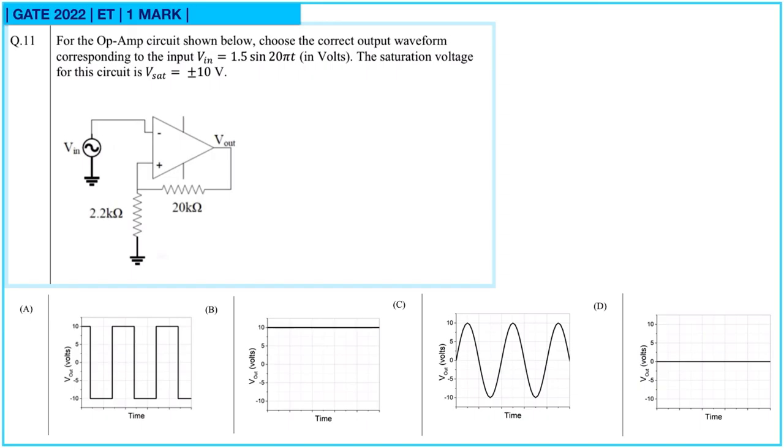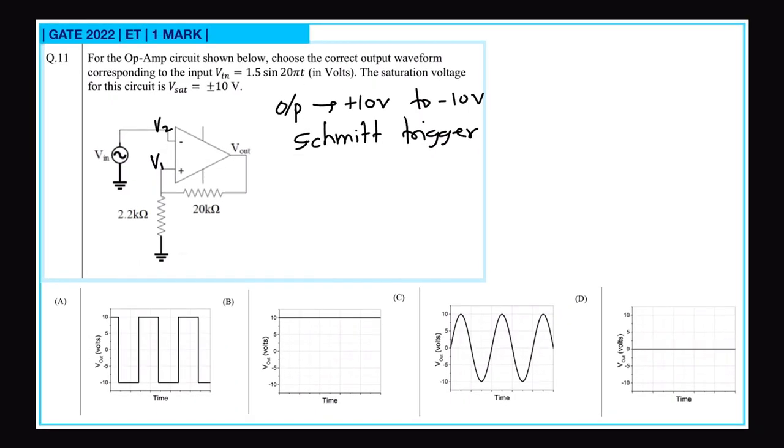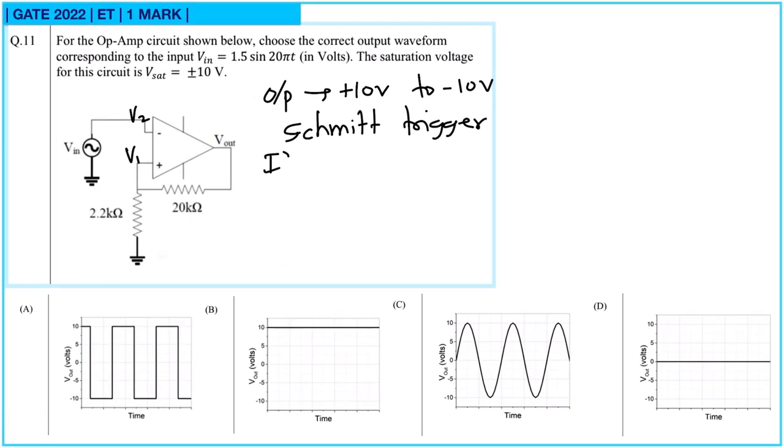The saturation voltage for this circuit is plus minus 10 volt. Now this is a Schmidt trigger circuit and here output will lie between plus 10 volt to minus 10 volt. Whenever the input at the non-inverting terminal, let this be V1, and voltage at inverting terminal let it be V2. So whenever V1 is greater than V2, in that case output will be plus Vsat.